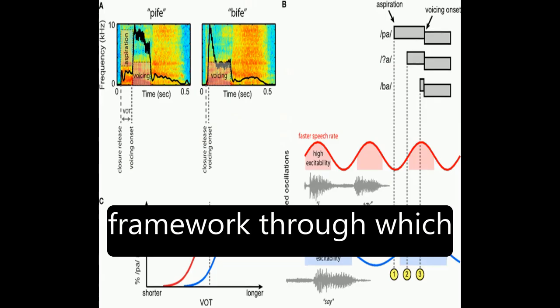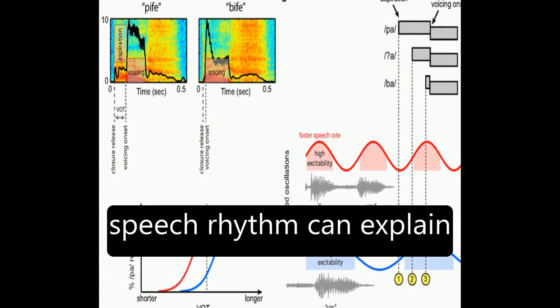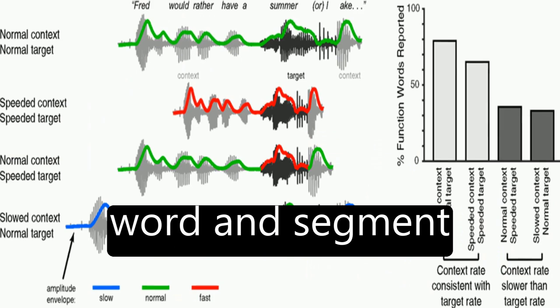The article suggests a framework through which neural entrainment to speech rhythm can explain effects of speech rate on word and segment perception.